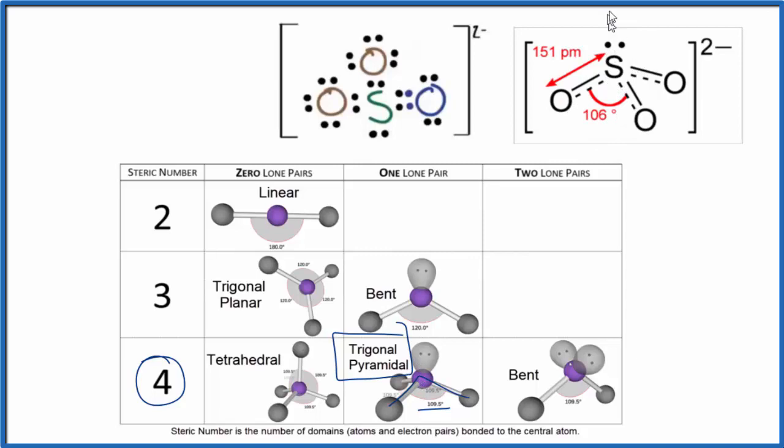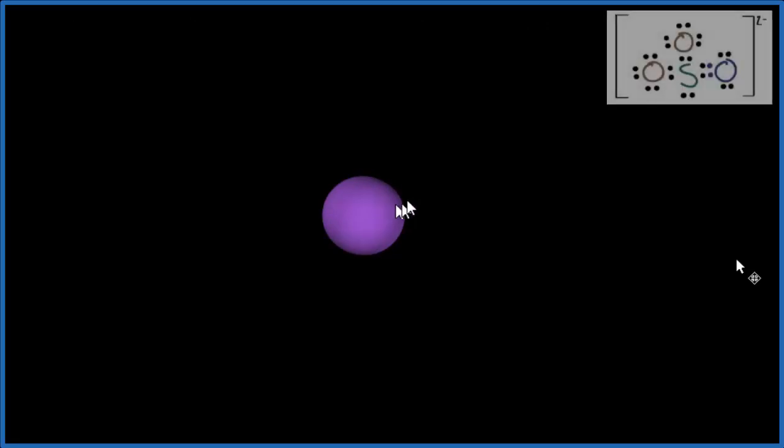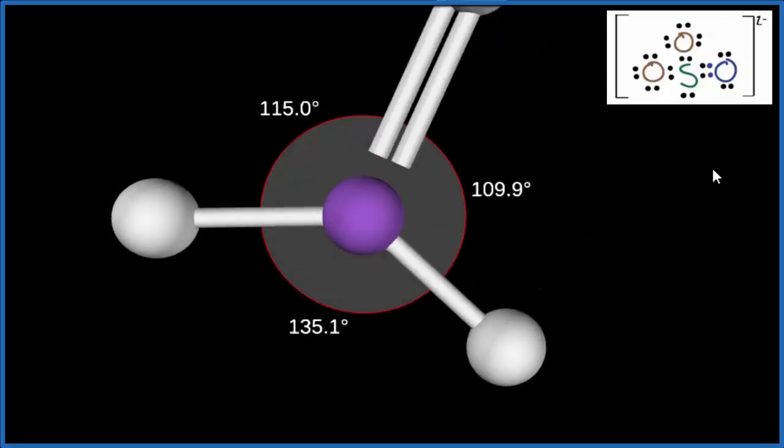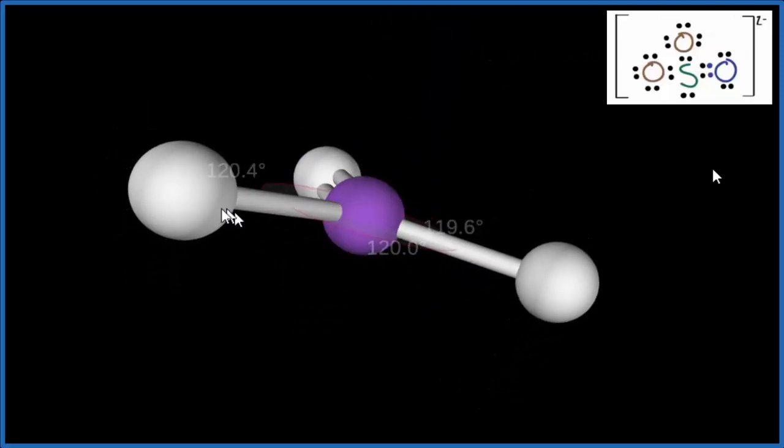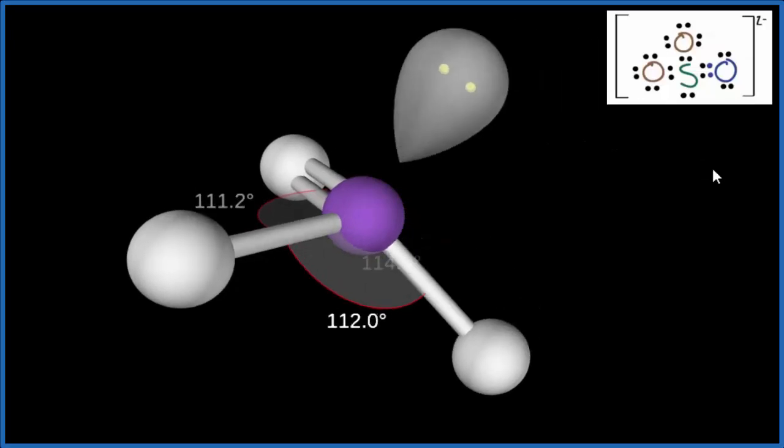That's because this lone pair pushes these oxygen atoms down and closer to each other. So let's consider this our sulfur atom here in the center, and let's add, we said one, two single bonds, and then a double bond. So this would be SO3 if we didn't have the lone pair. It's a trigonal planar molecular geometry. But when we add that lone pair,